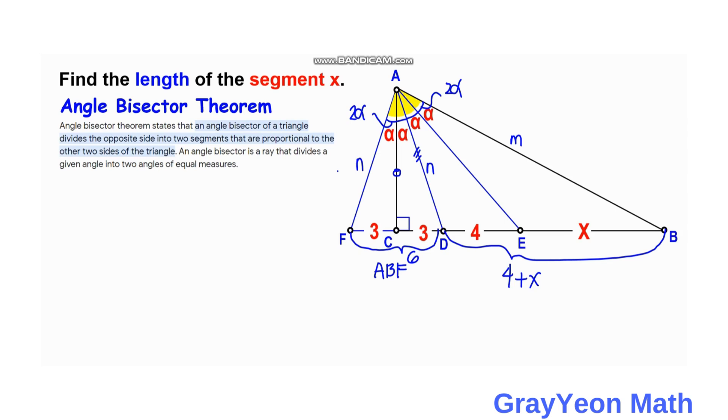These two segments, FD and DB, are divided into a ratio which is the ratio of the two sides, AB and AF. So we can make an equation: M over N is equal to 4 plus x over 6.